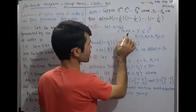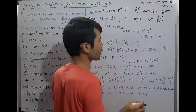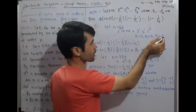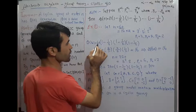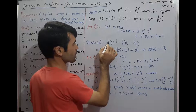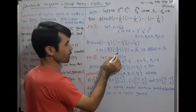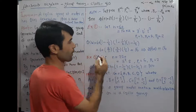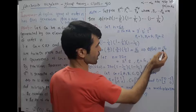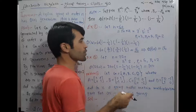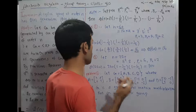We decompose 60: 60 = 3^1 · 5^1 · 2^2, so p1 = 3, p2 = 5, p3 = 2. Putting these values into the Euler totient formula: φ(60) = 60 · (1 − 1/3) · (1 − 1/5) · (1 − 1/2) = 60 · (2/3) · (4/5) · (1/2) = 16. This means there are 16 integers less than 60 that are relatively prime to 60.